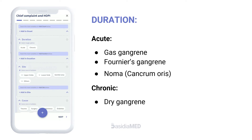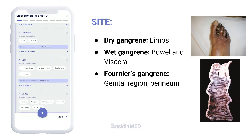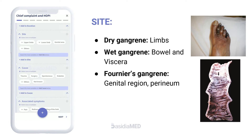Duration: gas gangrene, Fournier's gangrene, and Noma are of acute duration, while dry gangrene has a chronic course. Site: dry gangrene most commonly involves limbs and peripheries, while wet gangrene involves bowel and other viscera, but may also be seen in limbs. Fournier's gangrene involves the genitals and perineum.